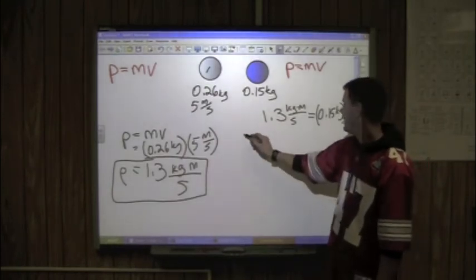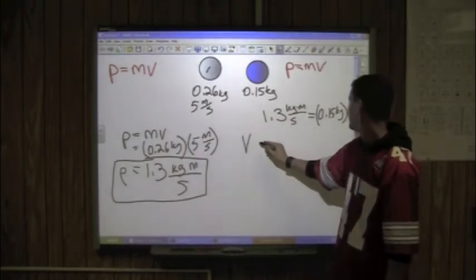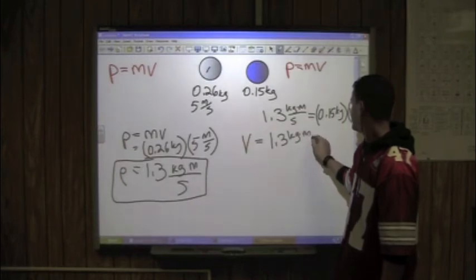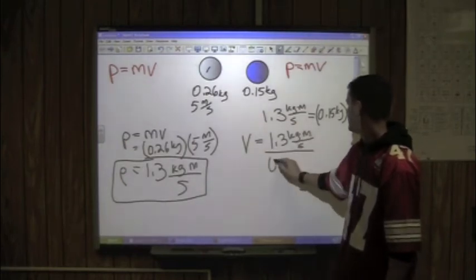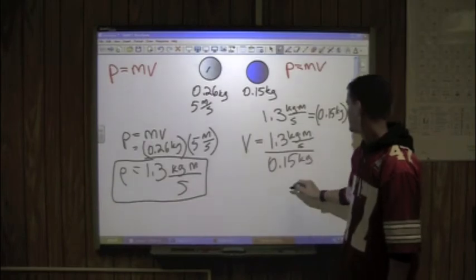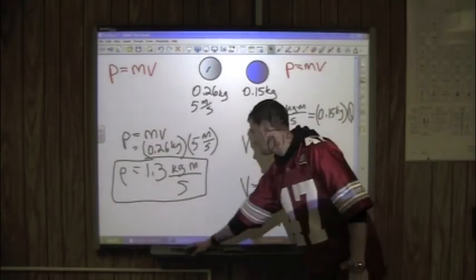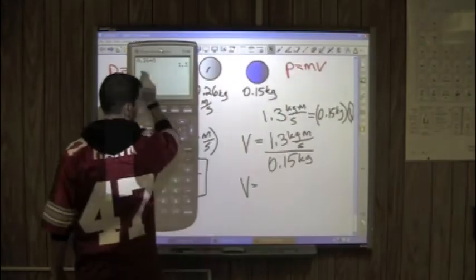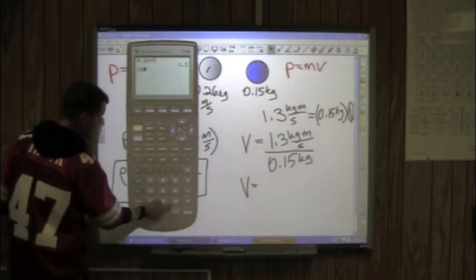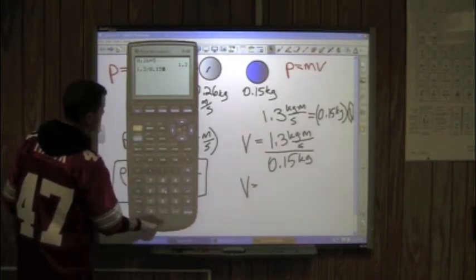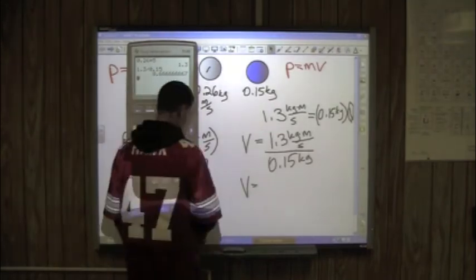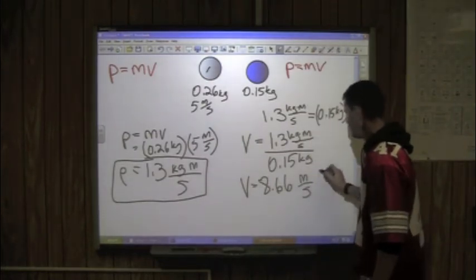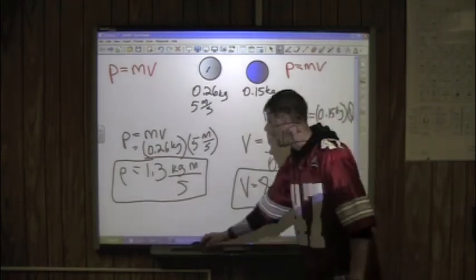So then we will move this equation around a little bit. And we will say that velocity is equal to 1.3 kilogram meters per second divided by 0.15 kilograms. So then we will find our velocity to be 1.3 divided by 0.15, 8.66 repeating. 8.66 meters per second.